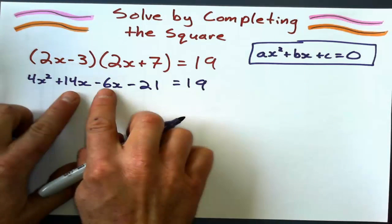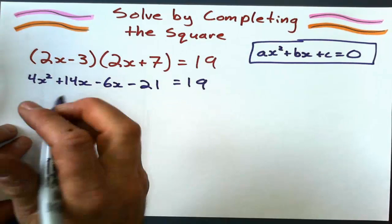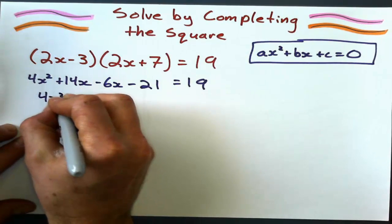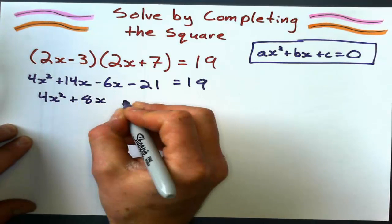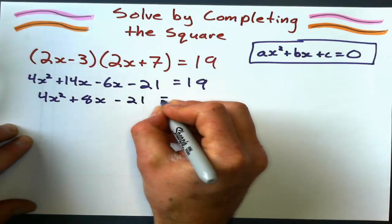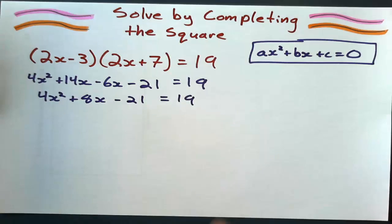Okay, now I clean this up a bit, combine these like terms here. And I get 4x squared, plus 8x, minus 21, equals 19.